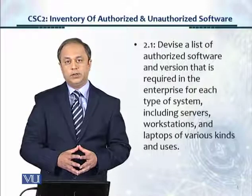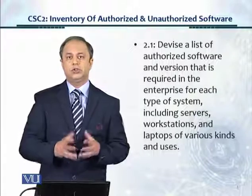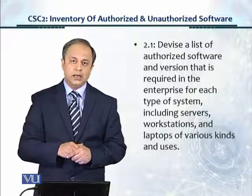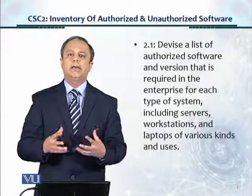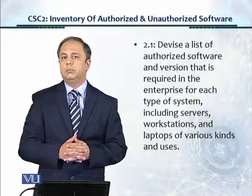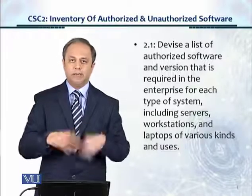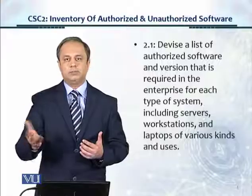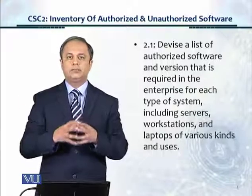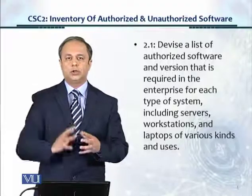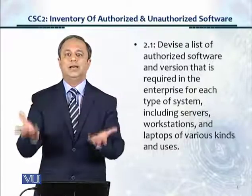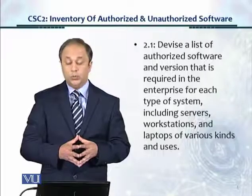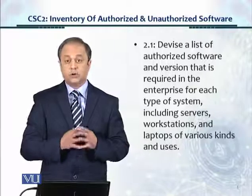The second type of software is customized software, which is developed within the organization. For example, in a team of 20 IT personnel, five of them may be ASP.NET developers, or there may be Android or iOS developers who develop business applications to automate business processes. The third type is custom software development, but developed outside the organization by a third party or software house. Irrespective of which of the three types you have, we do need to develop a list of authorized software and version.